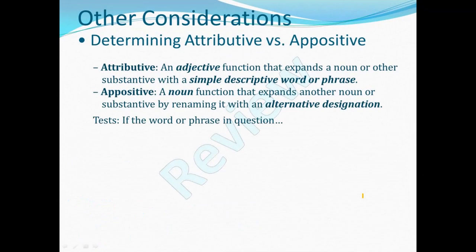In part six we also considered how to differentiate between attributive constructions and appositional constructions. An attributive is an adjective function that expands a noun or other substantive with a simple descriptive word or phrase, such as 'a large tree' — 'large' is a simple descriptive word for the noun 'tree.' An appositive is a noun function that expands another noun or substantive by renaming it with an alternative designation, such as 'Paul, the apostle.' We worked through the tests we can apply to determine whether a word in view is attributive or appositional.